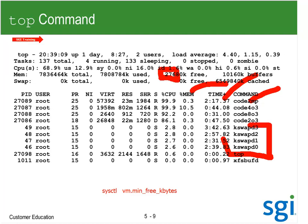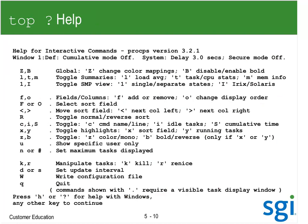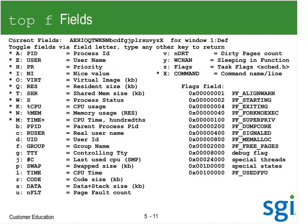A question mark in top can give you help. I've used dash-O a couple of times to sort by something other than the hog factor. When I'm done setting up the display the way I like it, a capital W will save a .toprc file. For fields, I like to have WCHAN in there. Dirty pages does not work — that's null. I do like page faults.